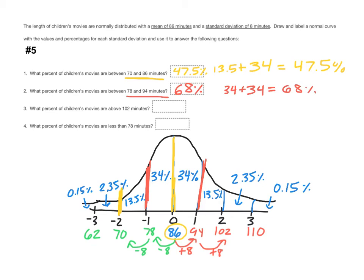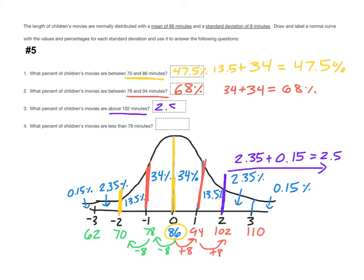The third question says: what percent of children's movies are above 102 minutes? When we find 102 minutes on the curve, the two sections above it are the 2.35% section and the 0.15% section. Adding 2.35 plus 0.15 equals 2.5%, so your answer to number three is 2.5%. The last question says: what percent of children's movies are less than 78 minutes? We can see 78 minutes is one standard deviation below the mean, and less than 78 means all sections to the left. We add 0.15 plus 2.35 plus 13.5, which gives 16%. The final answer on number four is 16%.